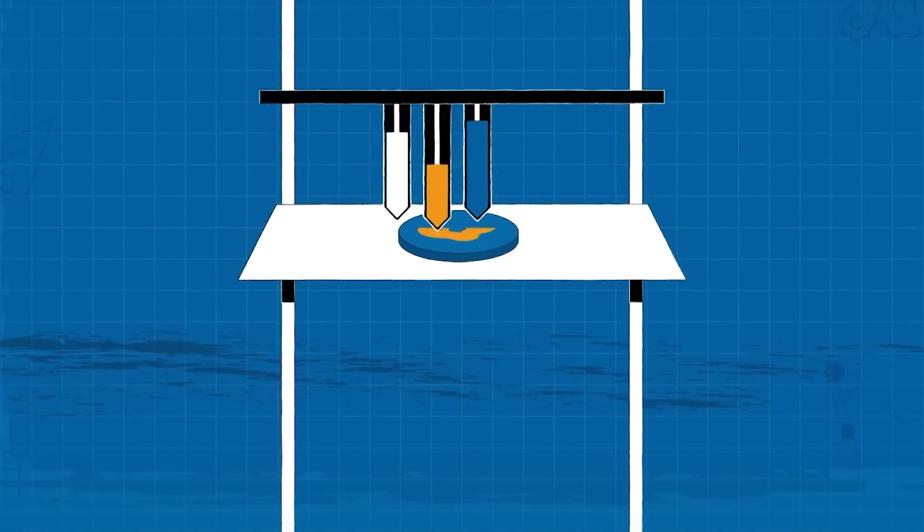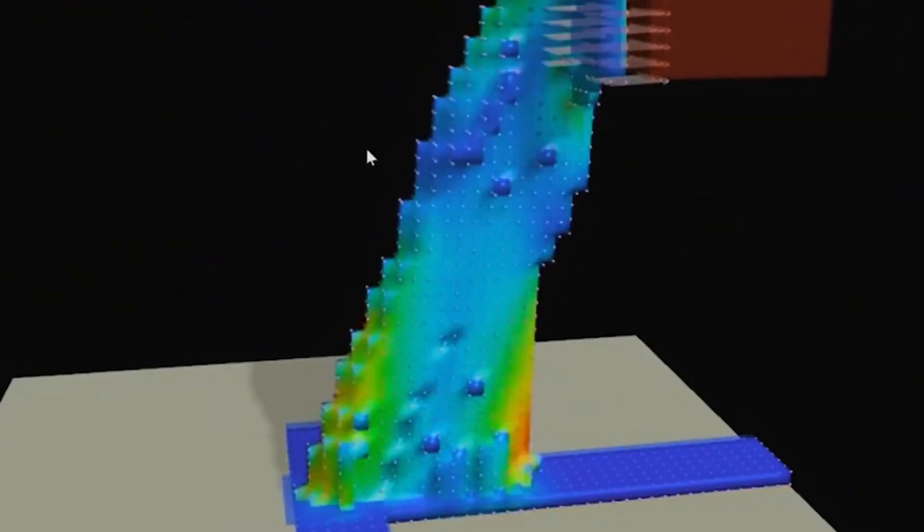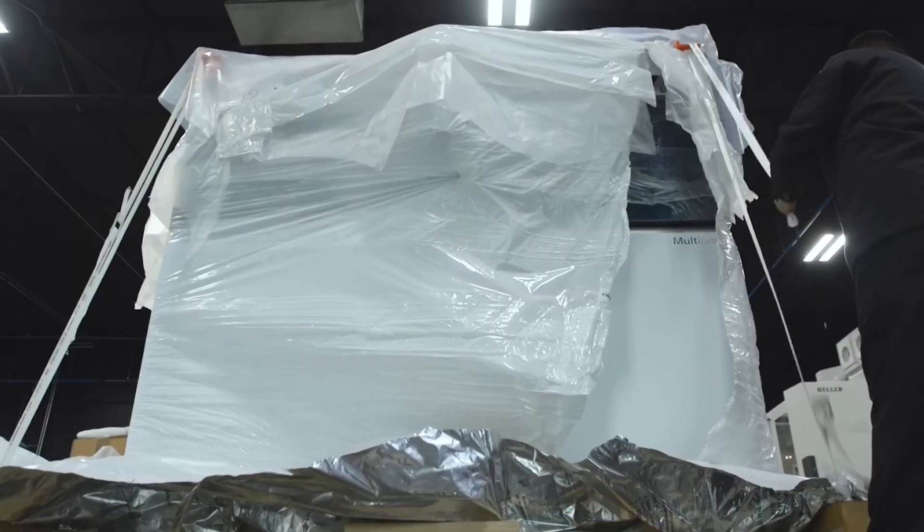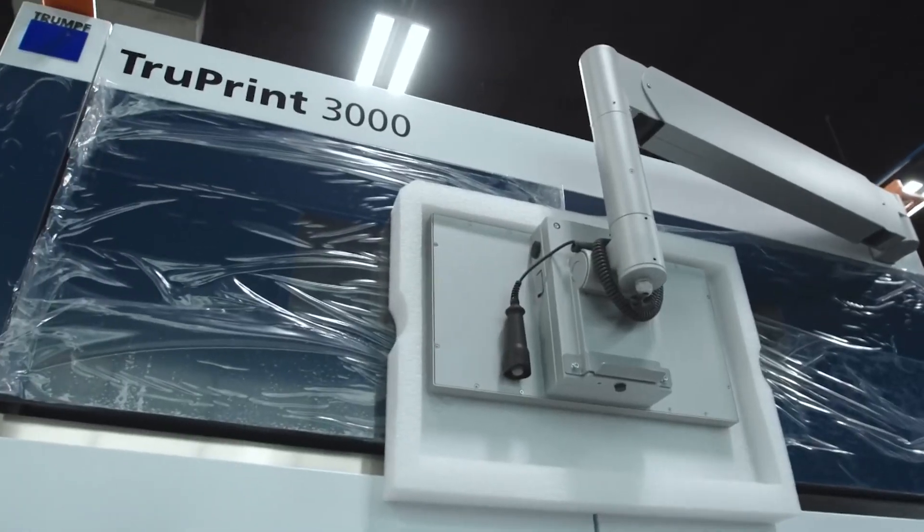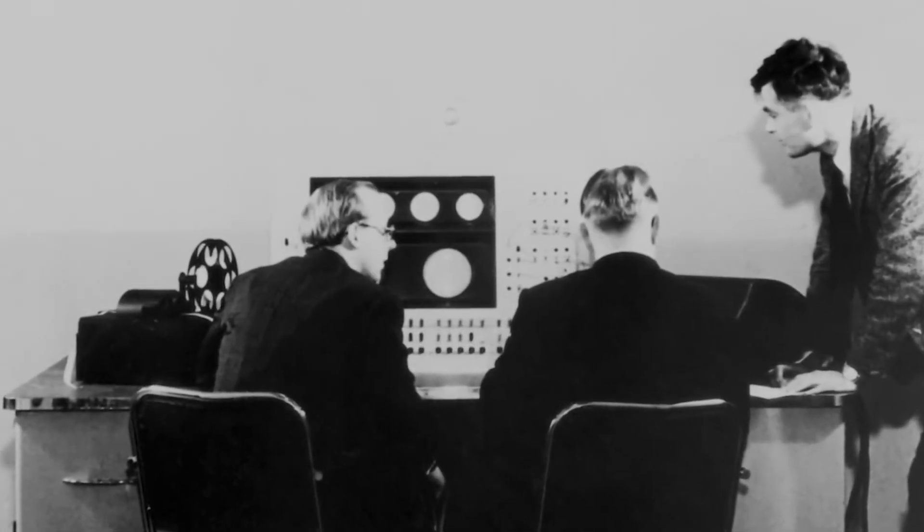That's not it. Some jobs might be at risk because 3D printing can replace some human tasks with automation. This could affect countries that depend on these jobs. Designs might not always turn out exactly as planned due to the limits of the machines, which can lead to more time and costs spent on fixing them. Lastly, the rise of 3D printing could lead to fake products being made, which can cause problems with copyright and quality control.